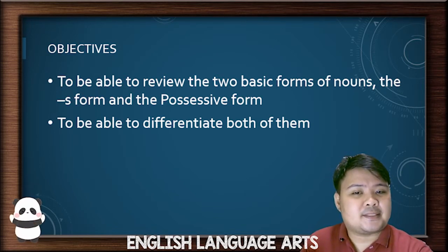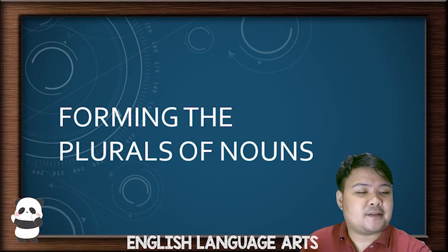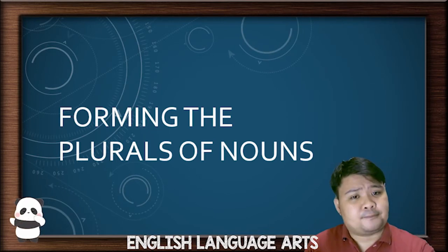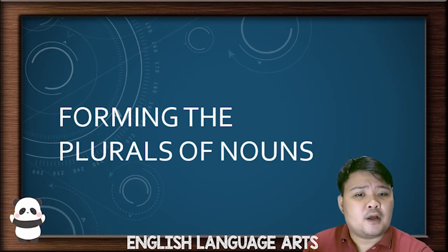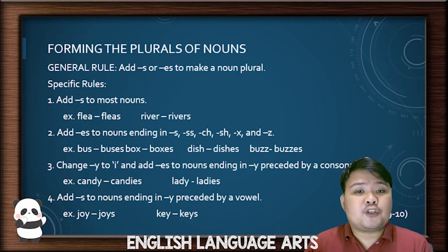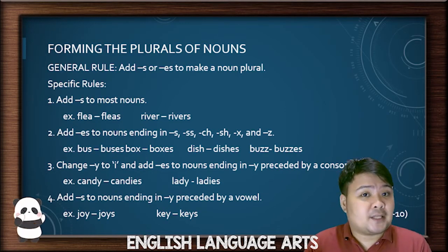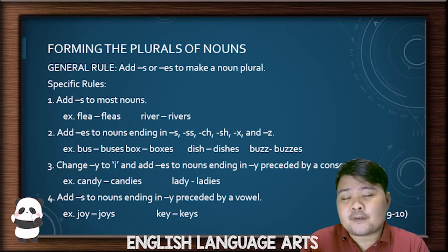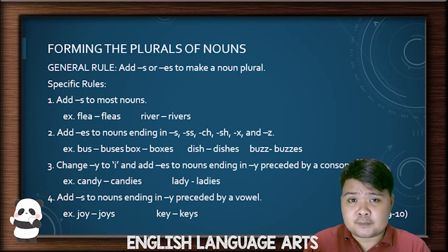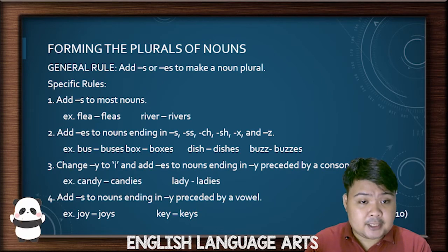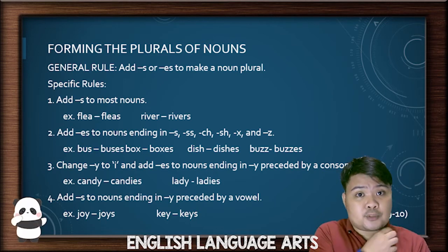Now let us discuss the very first one: forming the plurals of nouns. For the plurals of nouns, you have what you call a general rule. This is a term that I have made up — I call it 'servants.' For me, it means that if you apply this rule in whatever situation, people will most likely understand you.